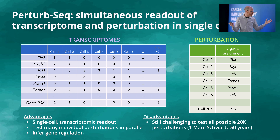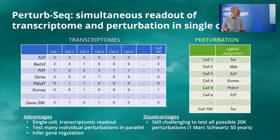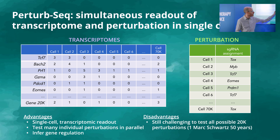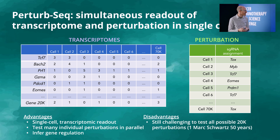The disadvantage of PerturbSeq is that it's really challenging to test all possible 20,000 perturbations. In this challenge, we're looking at about 70 perturbations. To characterize all 20,000 perturbations would take Mark Schwartz — the talented physician scientist who performed these experiments — about 50 years to collect all that data. Likewise, if we looked at combinations of perturbations, for instance knocking out tox and TCF7, that would require hundreds and hundreds of millions of cells. So the throughput of PerturbSeq is really good, but it's not infinite — there are limitations. Our hope with the data science challenge is that we can computationally move past some of these limitations.